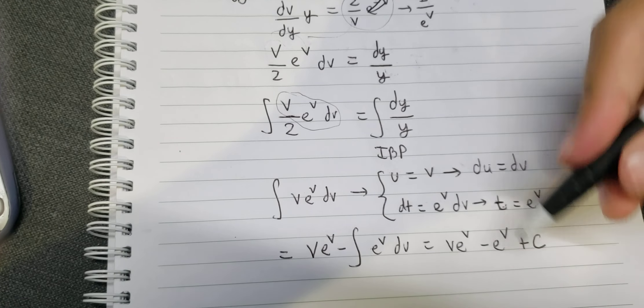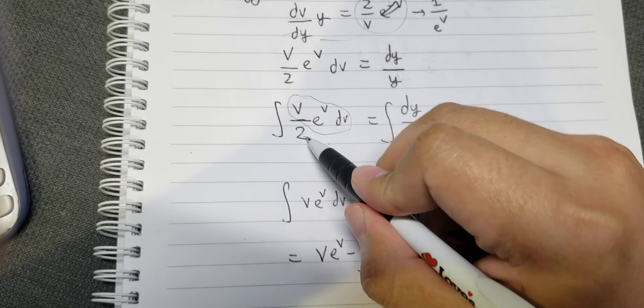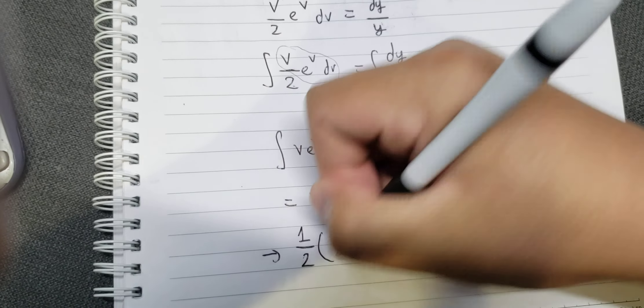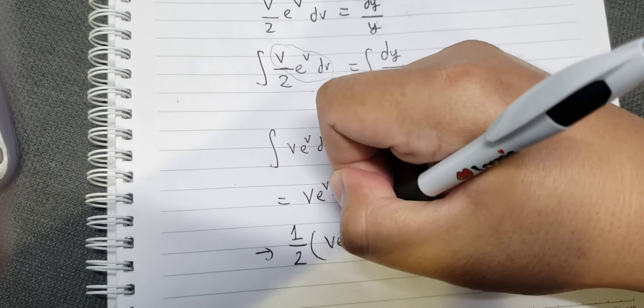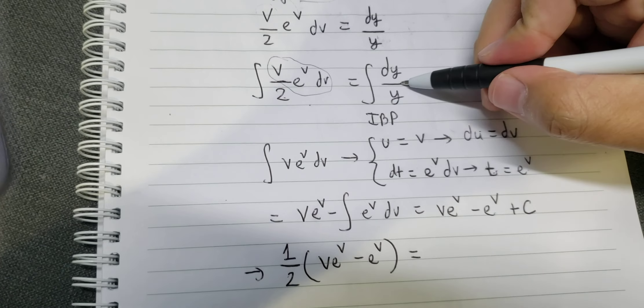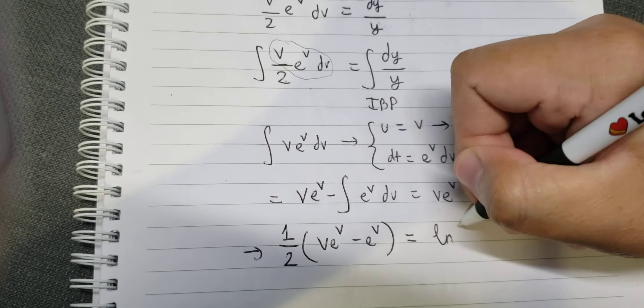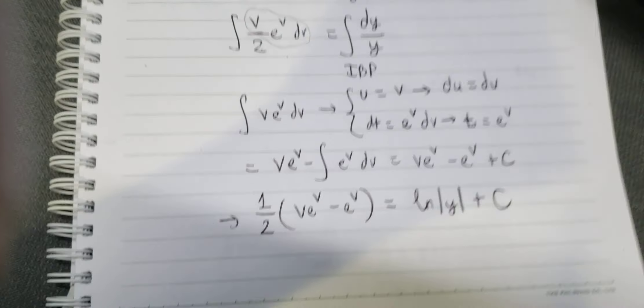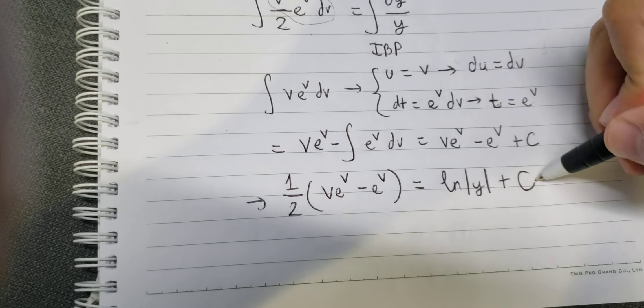Now we move this term over with 1 over 2, giving us ln of the absolute value of y plus a constant.